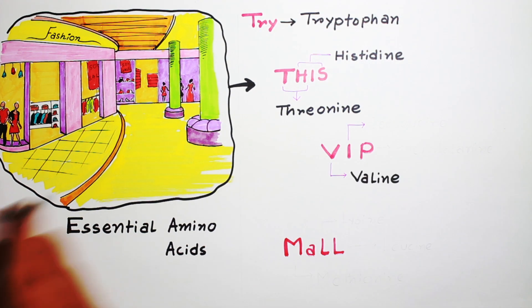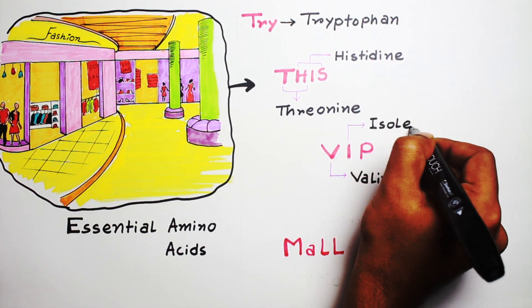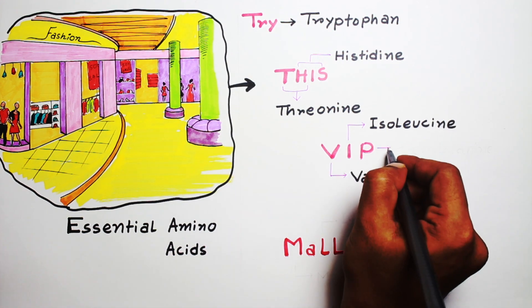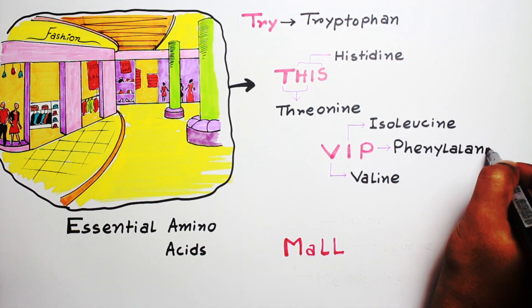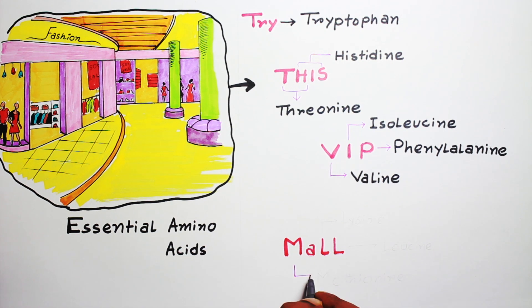and 'I' for isoleucine, and 'P' for phenylalanine. Now come to 'Mall.' 'M' represents methionine, and just leave the 'A'